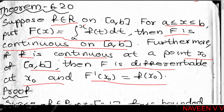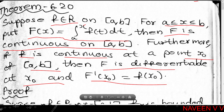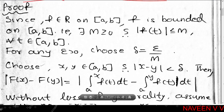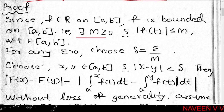For the second part, we need to prove: if f is continuous at a point x₀ in [a,b], then F'(x₀) = f(x₀). Since f belongs to R on [a,b], by definition f is a bounded real-valued function on [a,b]. By boundedness, there exists a positive real number M such that |f(t)| ≤ M for all t in [a,b]. For the first part, we prove F is continuous on [a,b]. In fact, F is uniformly continuous on [a,b].